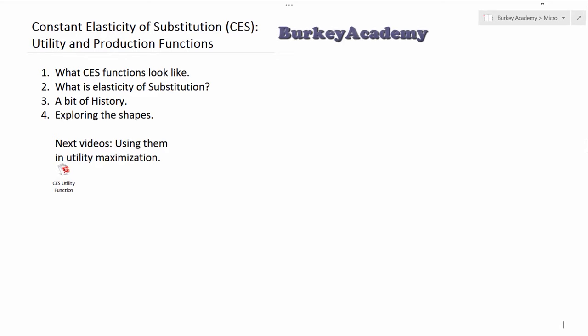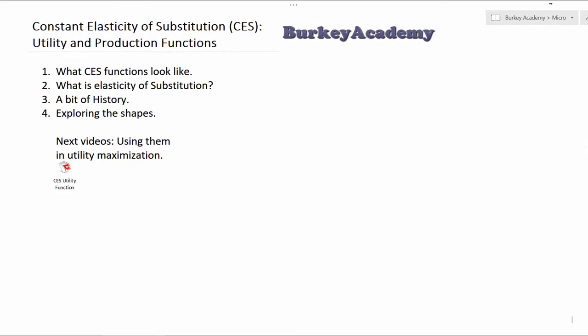I've received a couple of requests to talk about constant elasticity of substitution utility and production functions. What people have wanted me to do is give some examples of using these functions, say with Lagrangians, to maximize or minimize something. But before we go through and actually use a CES utility or production function, I wanted to make sure that we know what we're talking about here.